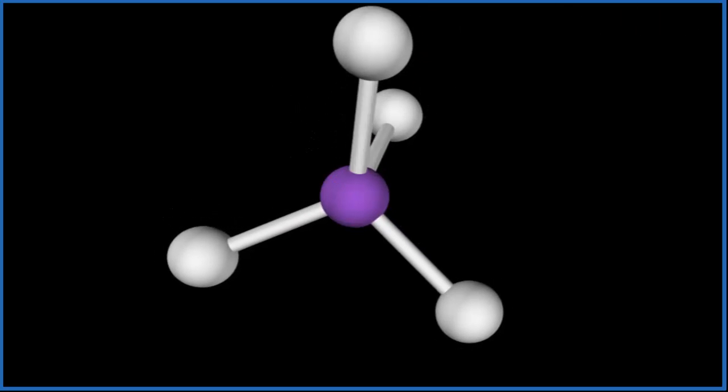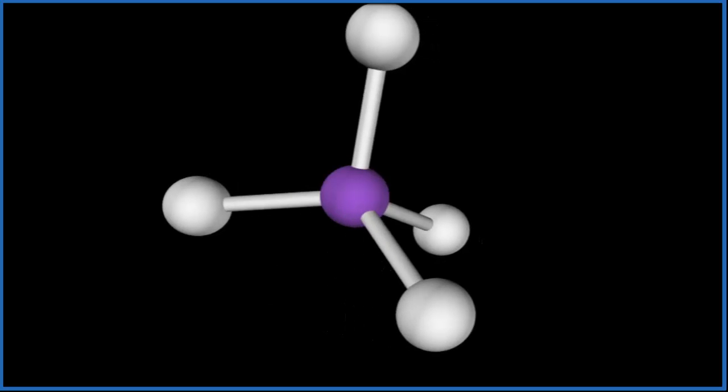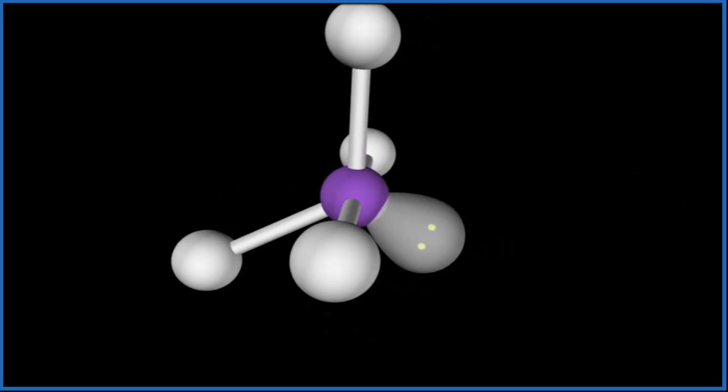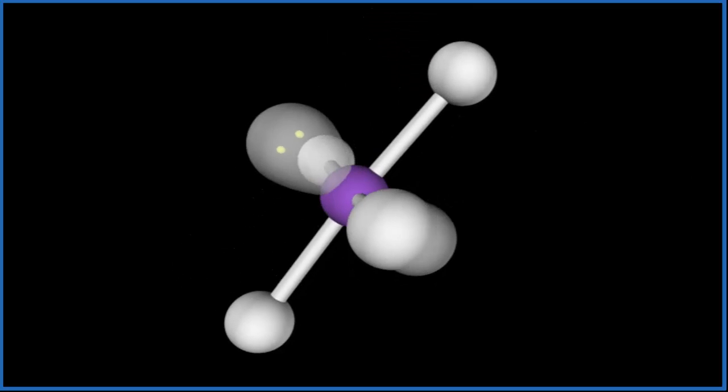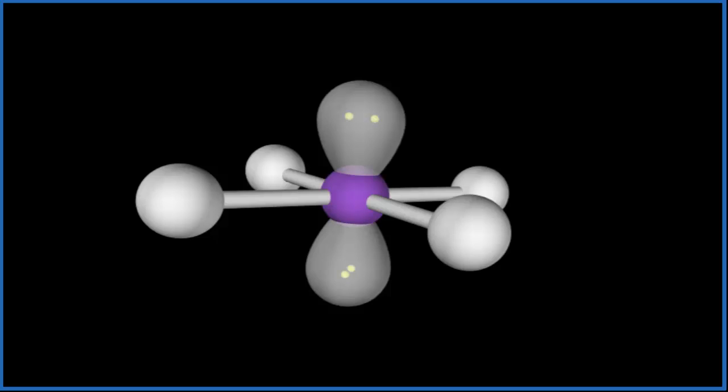Right now we have this tetrahedral structure, but remember we have those two lone pairs. So let's add those lone pairs here. There's one, everything pushes away, two, and we end up with what's called a square planar molecular geometry where all these fluorine atoms are kind of in a square in the same plane.